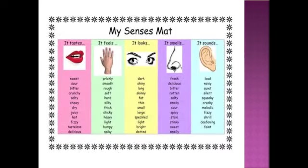These are some of the words that can be related to our different senses. Taste: we have sweet, sour, bitter, and salty.